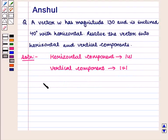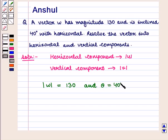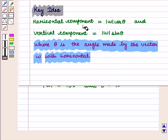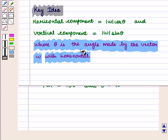We are given magnitude of w which is equal to 130 and theta which is equal to 40 degrees. Using the key idea we will find horizontal and vertical components. The horizontal component is given by magnitude of w into cos theta, and the vertical component is given by magnitude of w into sin theta, where theta is the angle made by the vector w with horizontal.